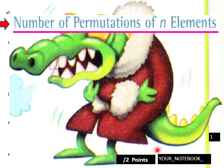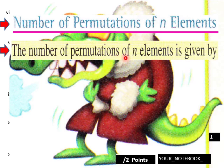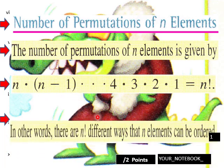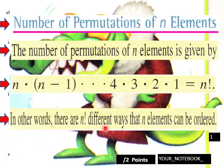Into today's lesson. On the first page: the number of permutations of n elements. The number of permutations of n elements is given by n times n minus 1 — in other words, there are n factorial different ways n elements can be ordered. We did that in Part 1 with the phone numbers and with the other lists of items.